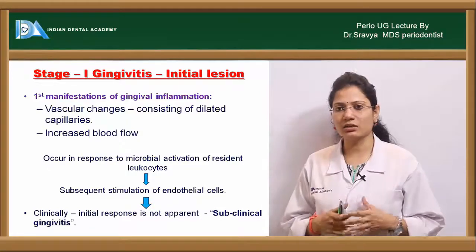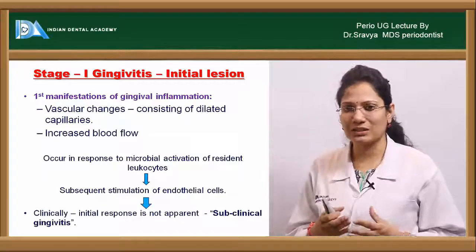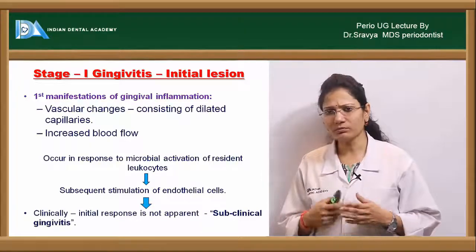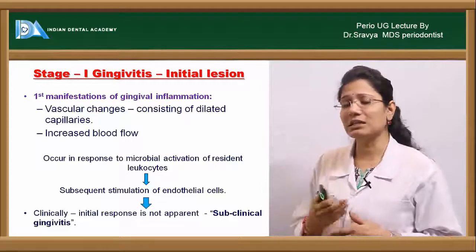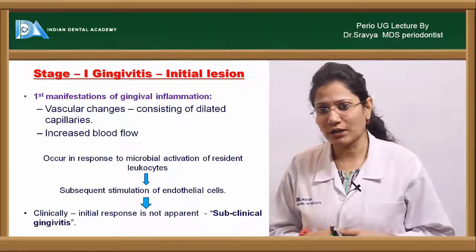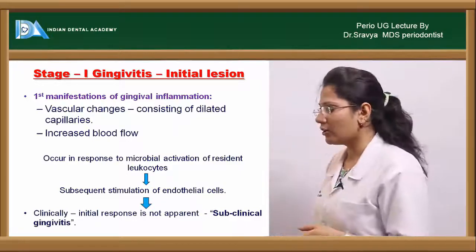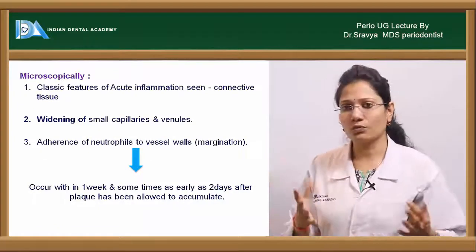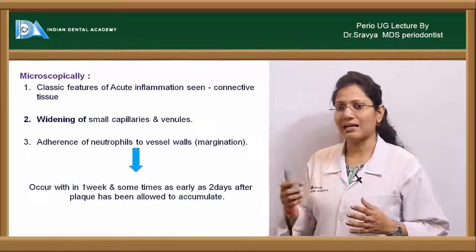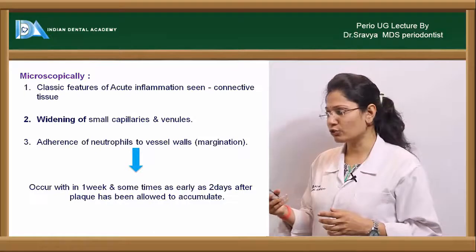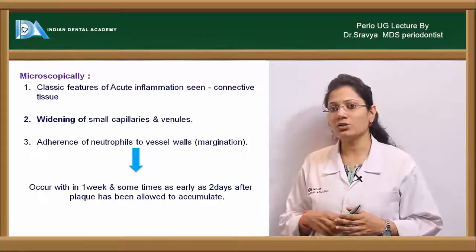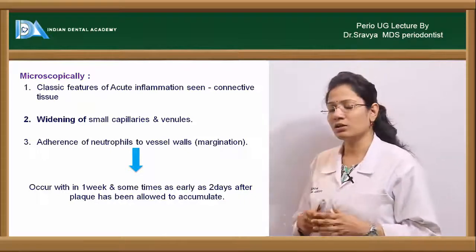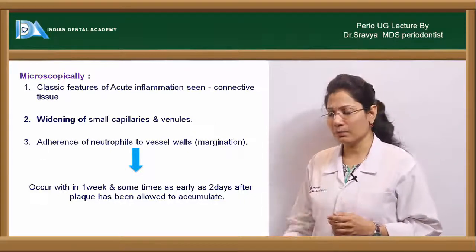What happens exactly here is there are vascular changes which cause an increase in blood flow and therefore increased secretion of gingival crevicular fluid. Microscopically, there is widening of small capillaries and venules, and adherence of neutrophils to the vessel walls, which occurs within one week and sometimes as early as two days after plaque accumulation.